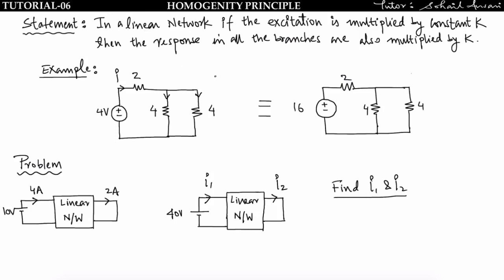That is known as the homogeneity principle. The homogeneity principle states that in a linear network, if the excitation is multiplied by a constant k, then the response in all branches is also multiplied by k. This is applied only in a linear network. Similarly, superposition theorem is also applied only in linear networks — it is not applied in non-linear networks.